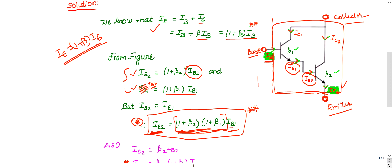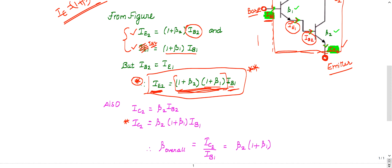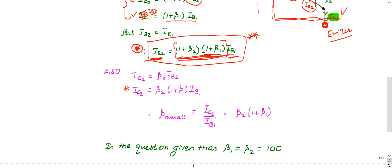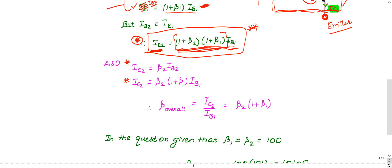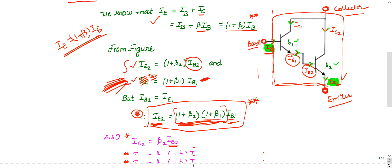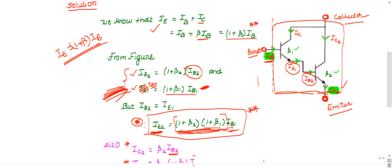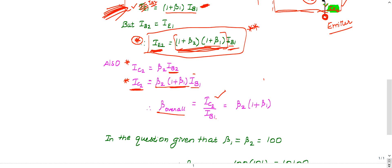Now for the overall collector current: ic2 = β2·ib2. Since ib2 = (1 + β1)·ib1, we get ic2 = β2·(1 + β1)·ib1. The overall beta is ic2 divided by the overall base current ib1. So overall beta = ic2/ib1 = β2·(1 + β1).